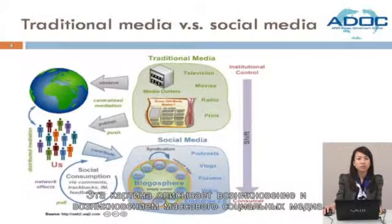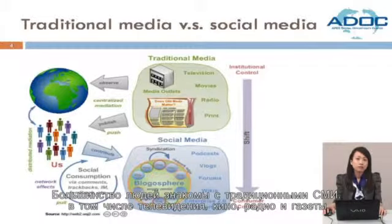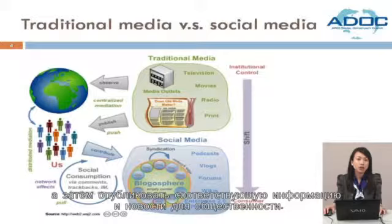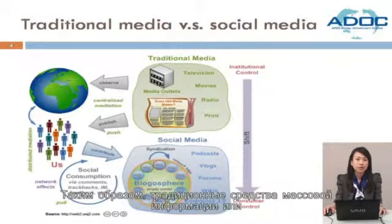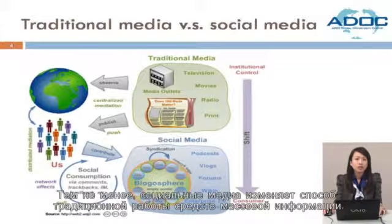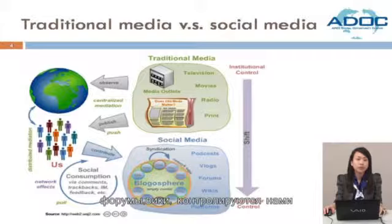This picture describes the emergence and rise of mass social media. It compares traditional media with social media. Most people are familiar with traditional media including television, movies, radio, and newspapers. Traditional media observes what happens in the world and then publishes related information and news to the public. Thus, traditional media companies control all of the information and content. However, social media changes the way that traditional media works. The tools of social media such as blogs, video blogs, forums, and wikis are controlled by users.